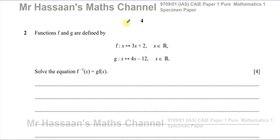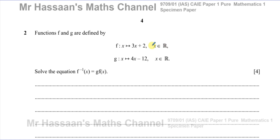Welcome back. This is Mr. Hassan's math channel. I'm now answering question number two from the Cambridge International A-Level Pure Mathematics P1 specimen paper. This question is about functions. They told us that functions f and g are defined by f of x is 3x plus 2, and g of x is 4x minus 12. In both cases, x is an element of the real numbers, so there's no restriction in the domain whatsoever.